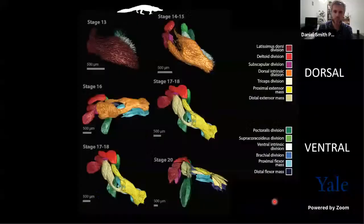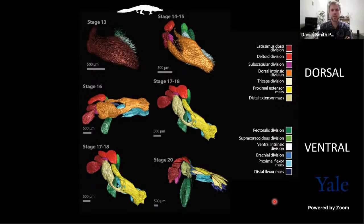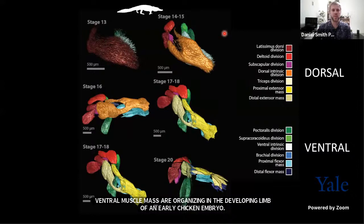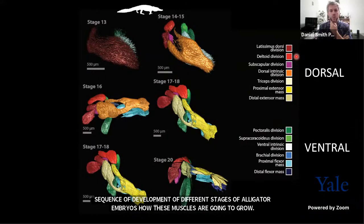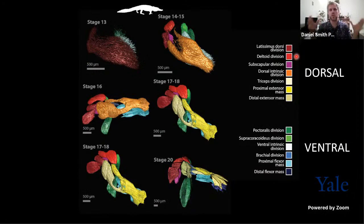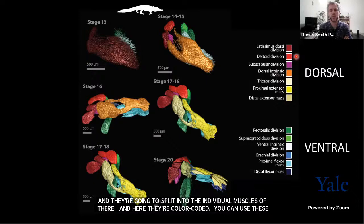You can see in this real image of a real embryo stained for proteins that this dorsal muscle mass and ventral muscle mass are organizing in the developing limb of an early chicken embryo. What I did during my PhD was following the muscles that develop from these masses. You can see here in this sequence of alligator embryos at different stages how these masses grow and split into individual muscles of the arm, color coded so you can follow where muscles are coming from.